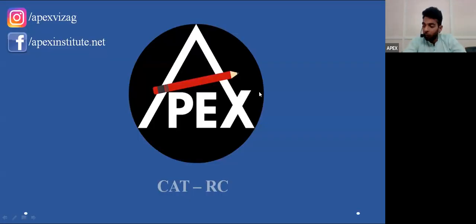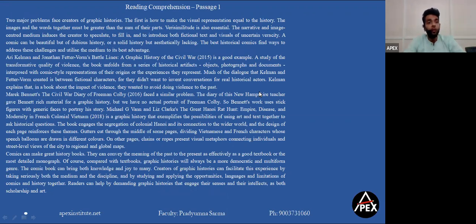All right, good evening everyone. This is your RC literature test 2, so let's have a look at the passage. The passage reads two major problems face creators of graphic histories. What are these two problems? Let's look at them. The first is how to make visual representation equal to the history. The images and the words together must be greater than the sum of their parts, meaning just the images or just the words should be less than what they both represent together.